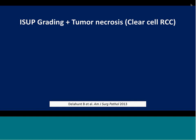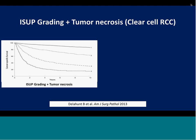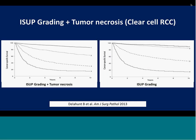ISUP has established its grading — but is there evidence that it works? Yes. There is an excellent study published in the American Journal of Surgical Pathology combining ISUP grading and tumor necrosis, showing very nice stratification of different strata. Stratification by ISUP grading alone without necrosis is slightly less powerful, and a case can potentially be made for merging grade 1 and grade 2 into one category because they almost overlap.